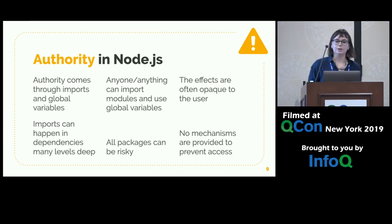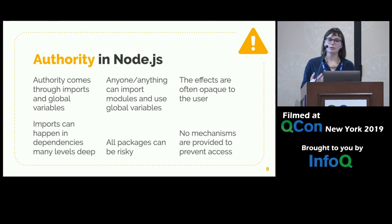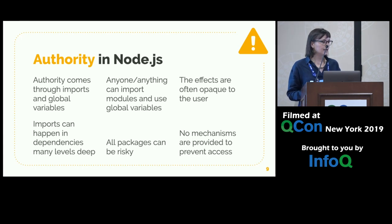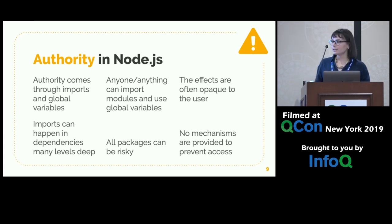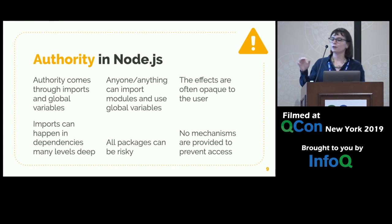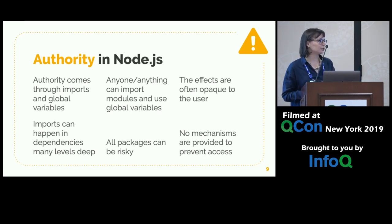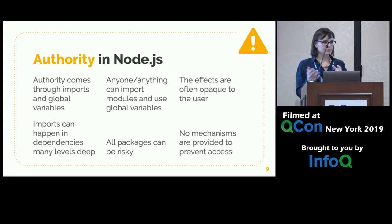Let's look at how authority works in Node.js. By authority, I mean the ability to do things. Authority in Node comes through imports using require, and through global variables. It turns out that anyone or anything can import modules, especially the Node built-in modules, and they can use global variables. The effects of this use are often opaque to the user — there's no notification that says your files are being sent over the network. And imports can happen in dependencies that are many levels deep, meaning all packages are potentially risky.